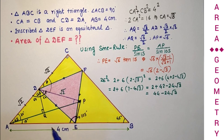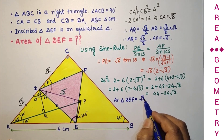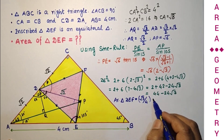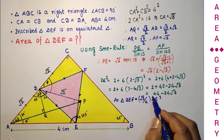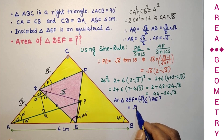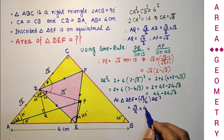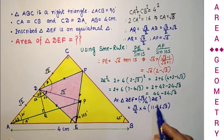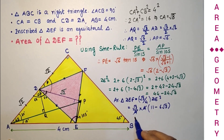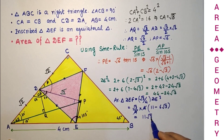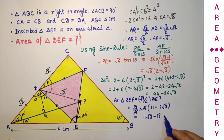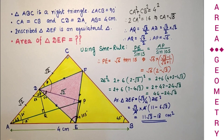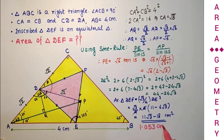The area of triangle DEF is (√3/4)·DE² = (√3/4)·(44 − 24√3). Taking 4 as a common factor: (√3/4)·4·(11 − 6√3) = √3·(11 − 6√3) = 11√3 − 6·3 = 11√3 − 18 cm². This is the exact area. On further simplification, this gives approximately 1.053 cm², which is the final answer.